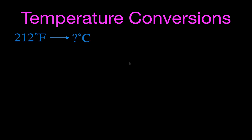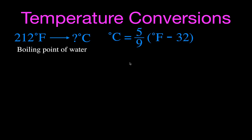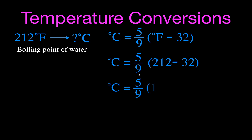Next, convert the boiling point of water from Fahrenheit to Celsius. Using the Fahrenheit-to-Celsius equation, we substitute 212°F: 212 minus 32 is 180, times 5 divided by 9 gives us 100°C. So the boiling point is 212°F on the Fahrenheit scale and 100°C on the Celsius scale.